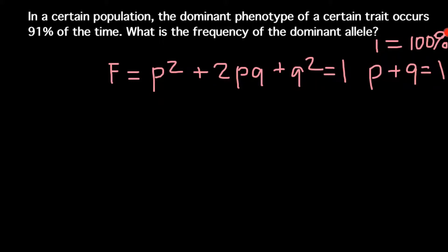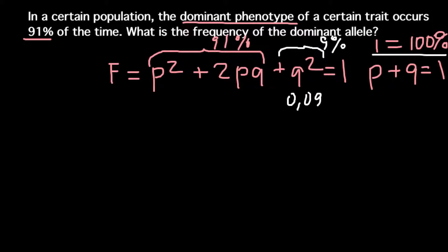We're told that the dominant phenotype, which would be these two genotypes, equals 91%. That means the recessive genotype and phenotype would make another 9%. On this scale where 1 equals 100%, that means 9% is going to be 0.09 frequency, and these two genotypes would equal to 0.91.